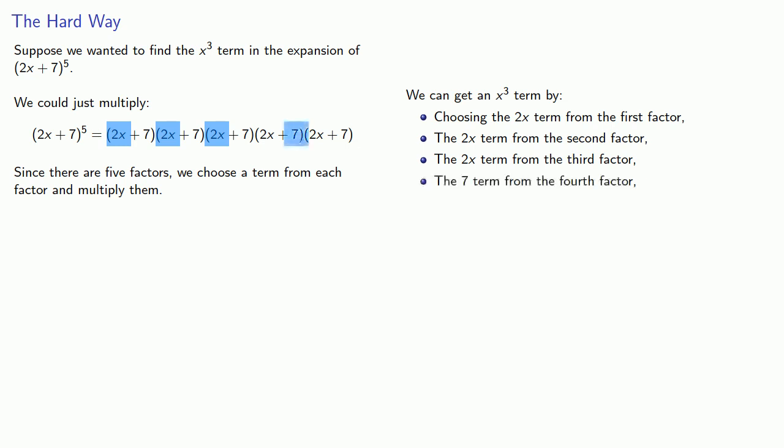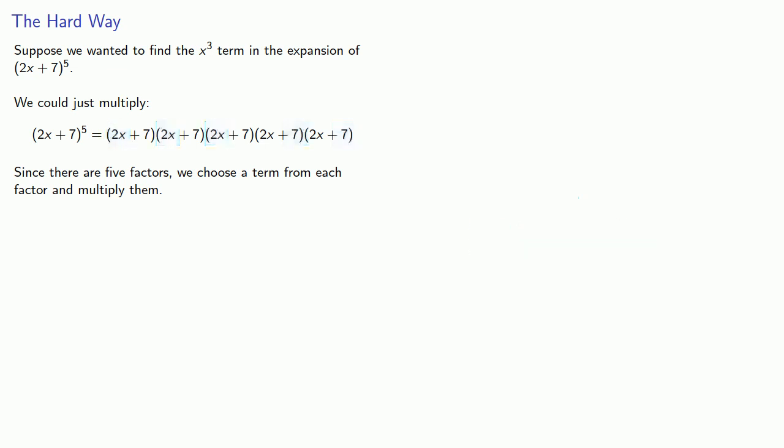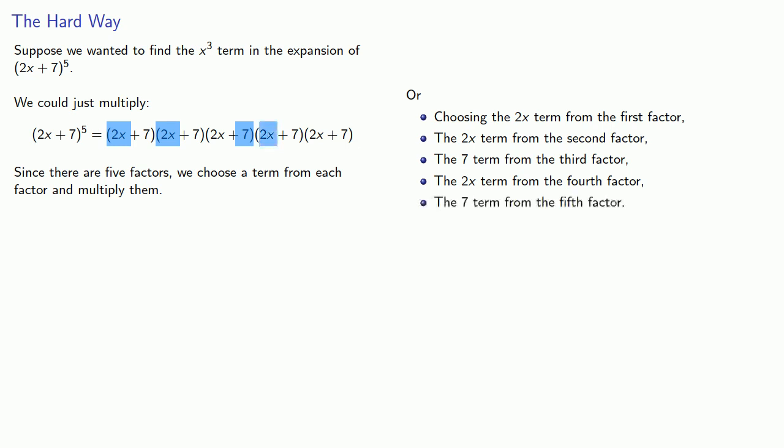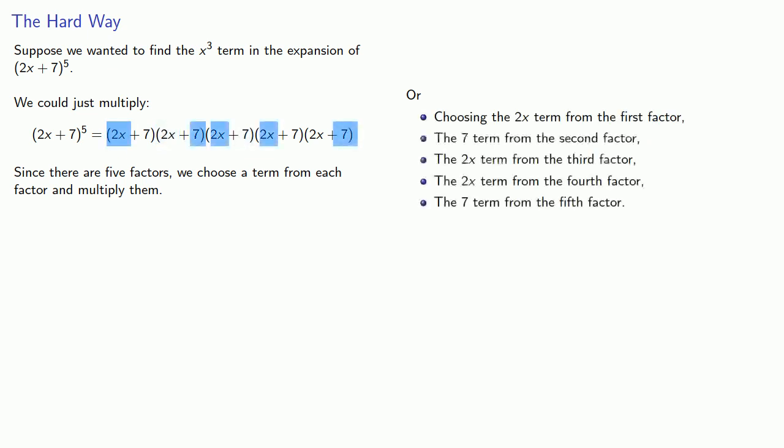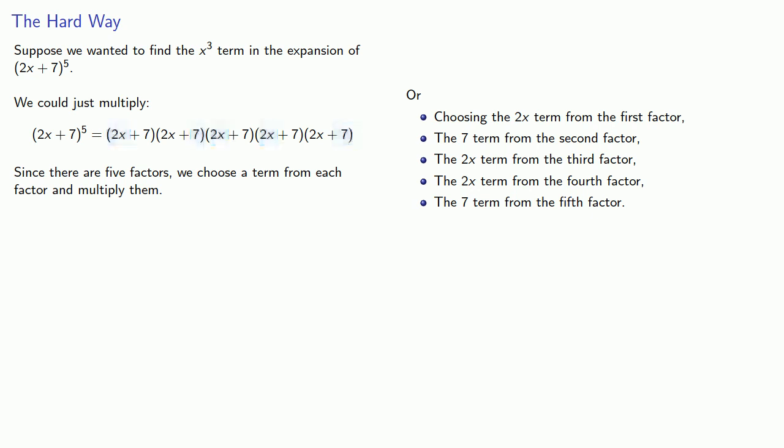So I need to choose the 7 terms from the fourth and fifth factors. But we have to choose every possible way. Maybe we'll choose 2x, 2x, 7, 2x, and 7. Or maybe 2x, 2x, 2x, 2x, and 7. There's a lot of ways we could get an x cubed term, so we'd rather not do it this way because it's very tedious, and unless we're very careful, we'll miss terms.